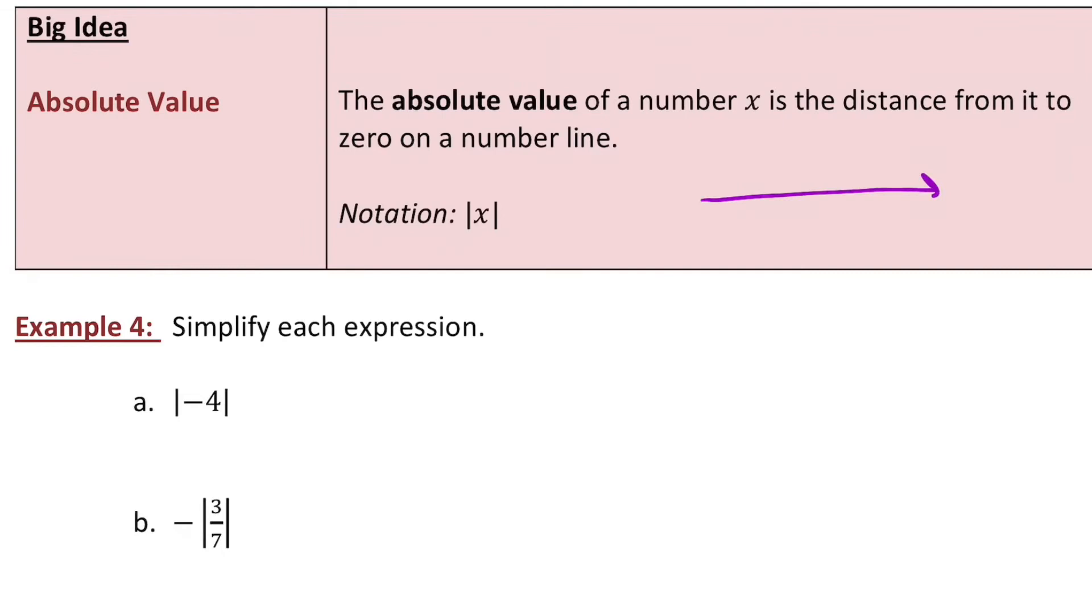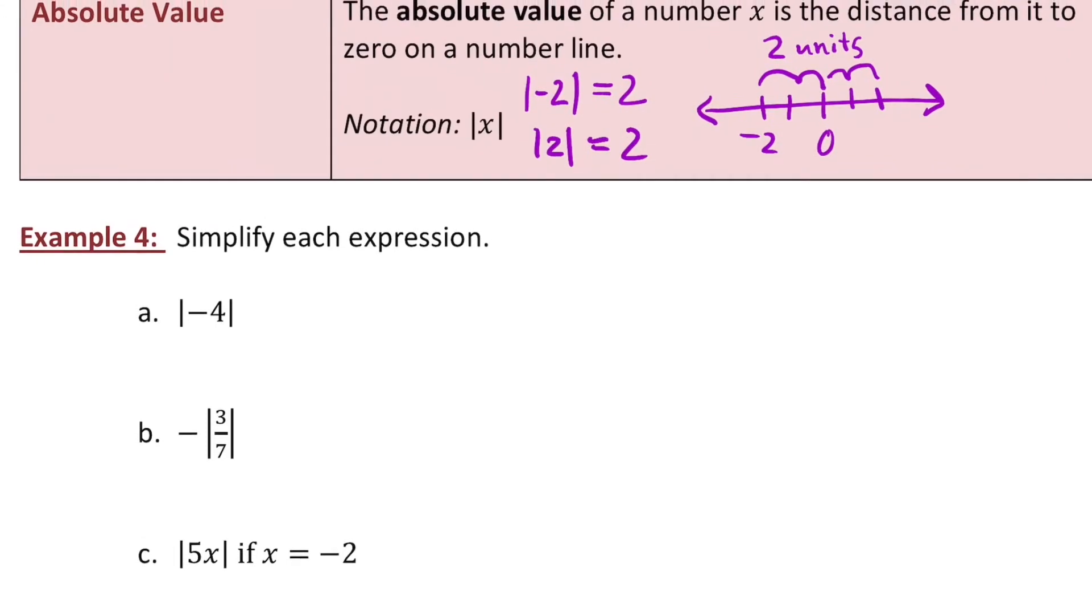So let's talk absolute value. The absolute value of a number is the distance between it and 0. So if you think about the absolute value of, say, negative 2, the distance from negative 2 to 0 on a number line is 2 units. So it's a distance measure. It doesn't care about what direction I'm going. So that's equal to 2 units. Similarly, the absolute value of positive 2 is also 2 because positive 2 is the same distance, 2 units, from 0.